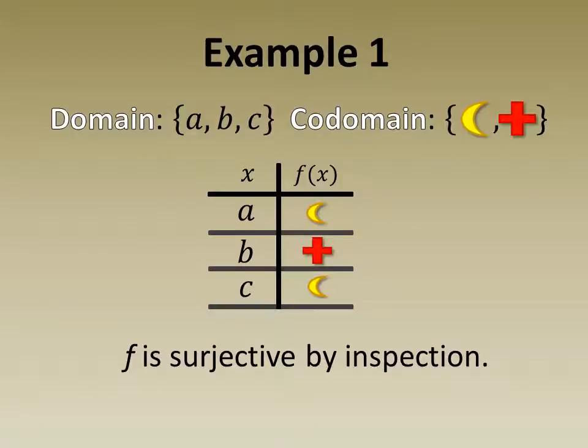In example 1, our function f has a domain comprised of the letters a, b, and c and a codomain comprised of a crescent and a cross. By inspection we see that f is surjective as every element in the codomain appears at least once in the right column.